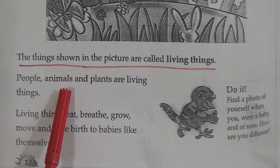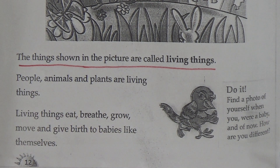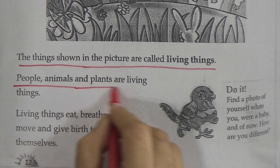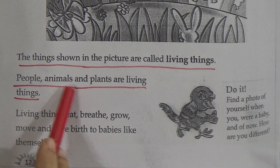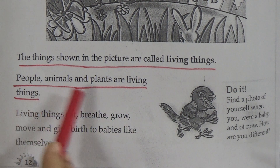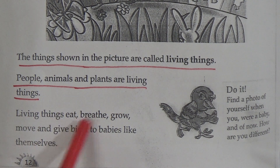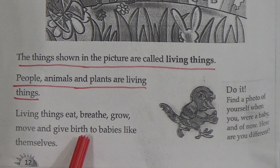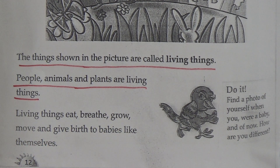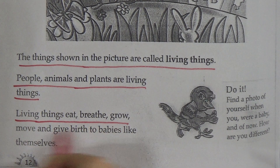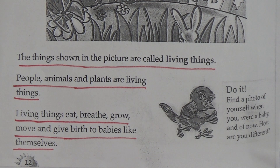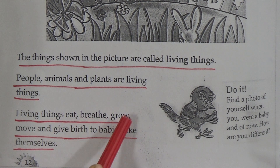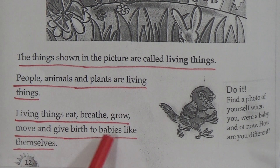People, animals, and plants are living things. Underline this line — it is very, very important and you have to memorize it. Living things eat, grow, move, and give birth to babies like themselves. Underline this line also — it is important and you have to memorize it.